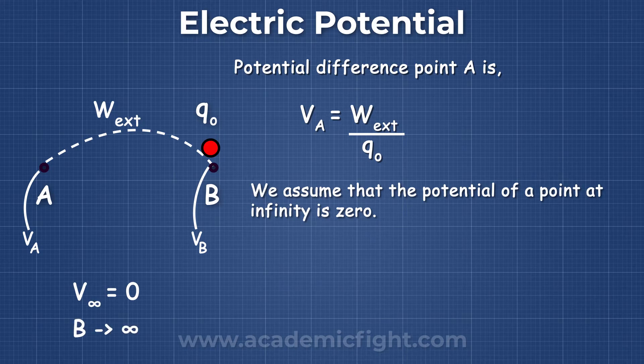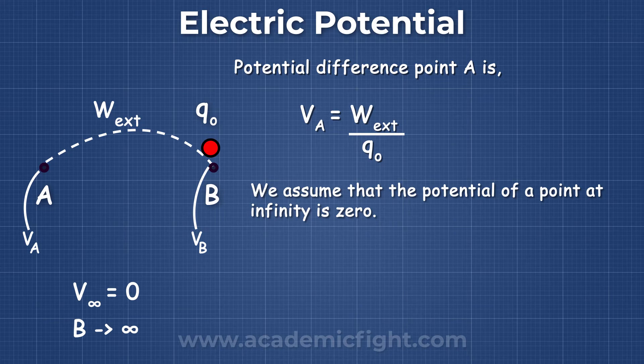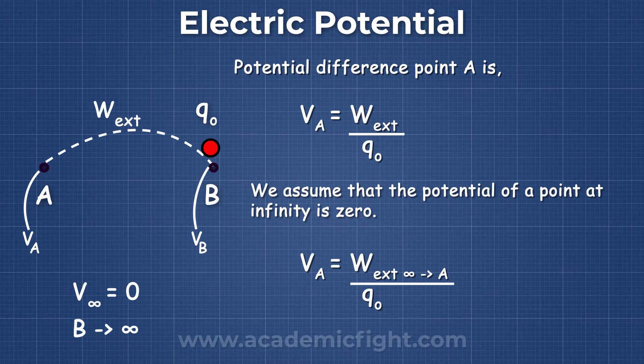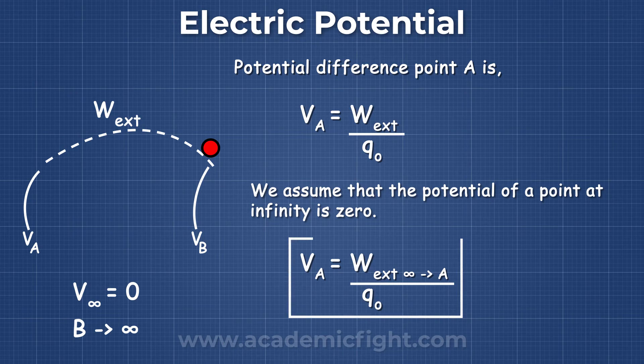So therefore, the potential of point A is equal to work done in bringing a test charge from infinity to point A. VA is equal to W by Q0. So this is how we define the potential of any point, relative to infinity. This is the basic concept of electric potential.